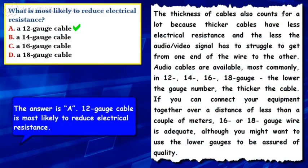The answer is A. A 12-gauge cable is most likely to reduce electrical resistance.